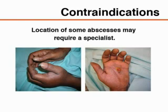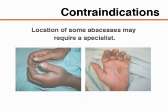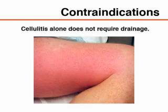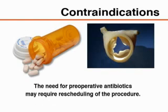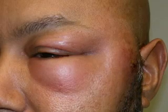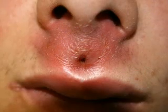Abscesses of the palms, soles, or nasolabial folds can be associated with complications and may require consultation with an appropriate specialist. Incision and drainage is not indicated for cutaneous cellulitis without an underlying abscess. The need for preoperative antibiotics for conditions such as abnormal or artificial heart valves may require reconsideration of the timing for the procedure. Input from an appropriate specialist may be important for areas of the body with cosmetic concerns because of expected scar formation after abscess drainage.